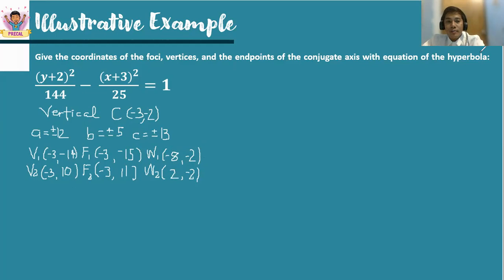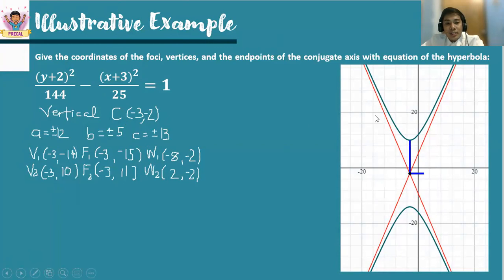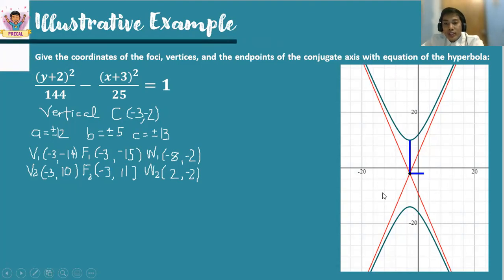So these are now the three important points: the foci, the vertices, and the endpoints of the conjugate axes of the given equation. This is how the graph of (y plus 2) squared over 144 minus (x plus 3) squared over 25 equals 1 looks. Notice that the center is located on the third quadrant. The blue lines represent the conjugate and the transverse axis. The red lines are the asymptotes. When you draw the vertical hyperbola with branches which open upward and downward, they always go along with the asymptotes.